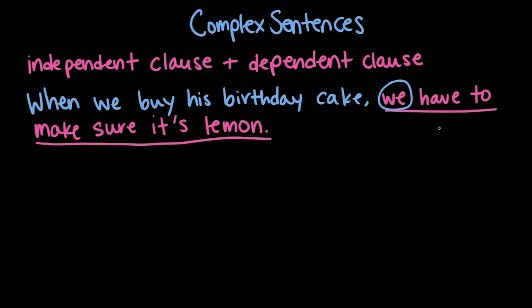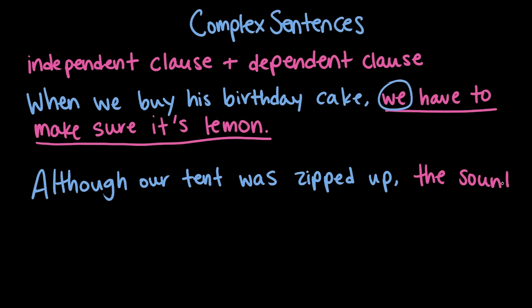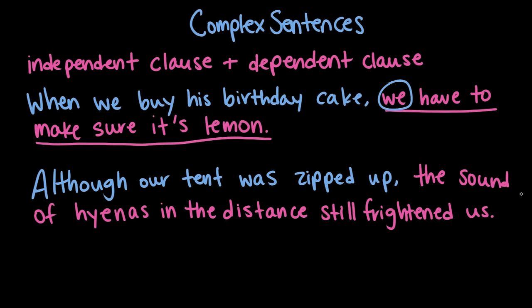What's another example of a complex sentence? Although our tent was zipped up, the sound of hyenas in the distance still frightened us. So again, this sentence starts with a dependent clause: 'although our tent was zipped up.' This would be independent if it said 'our tent was zipped up.' But again, we have this subordinating conjunction, 'although,' at the beginning. There are quite a few different subordinating conjunctions — they're something you need to remember. Essentially, their job is to connect clauses in sentences, but also to make things into dependent clauses.